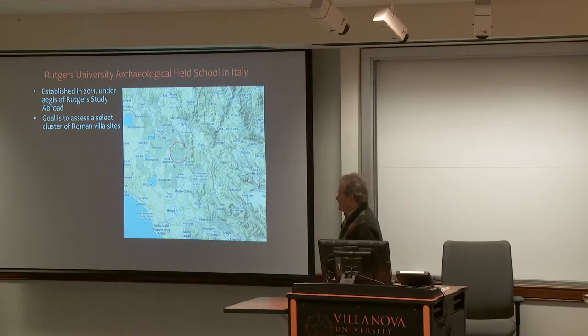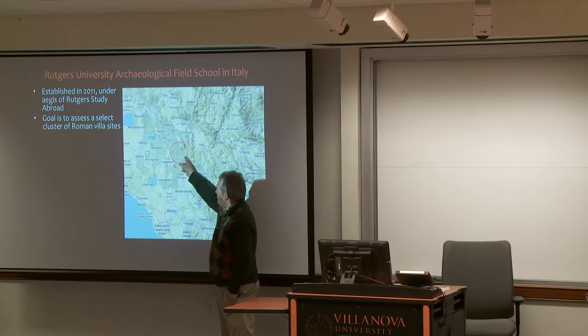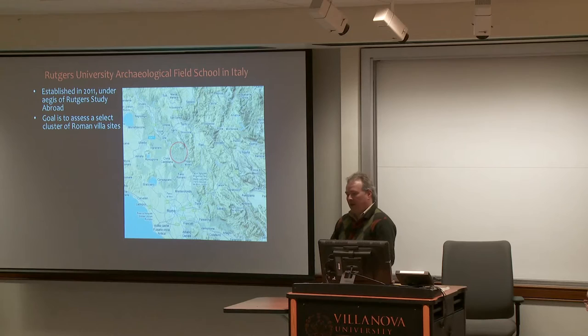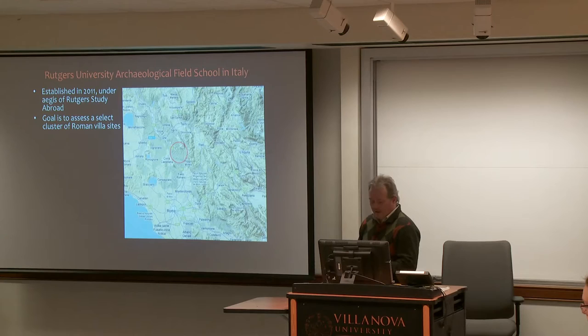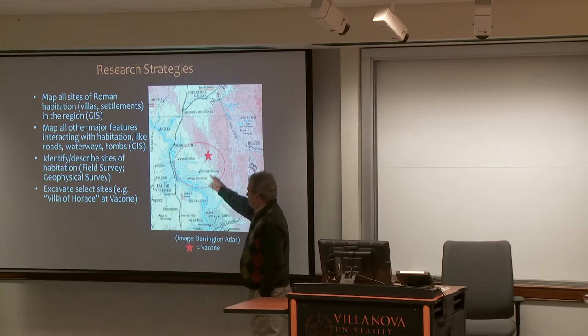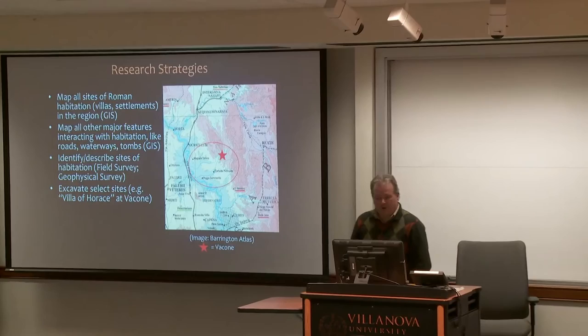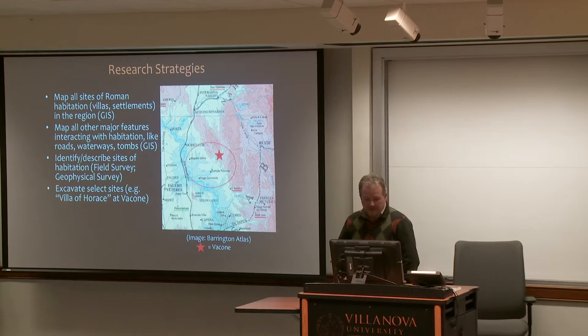We're out in Bacchone and similar places in Italy. Here's Rome — we're studying this entire region as part of a greater project. We're basically studying all of the Roman habitation in the area, and part of this is excavating at one habitation site in particular. We're trying to map all Roman sites — villas and settlements — in the study region, and we're developing a GIS database. We're also trying to figure out where roads and waterways were.